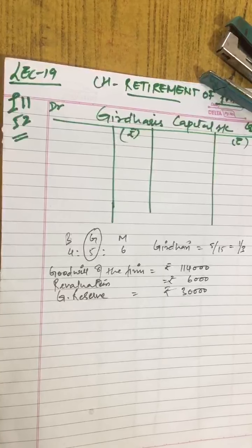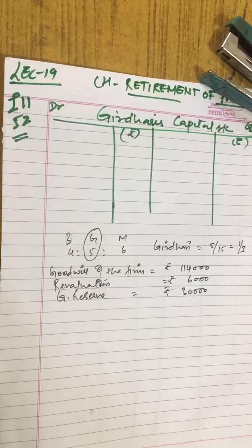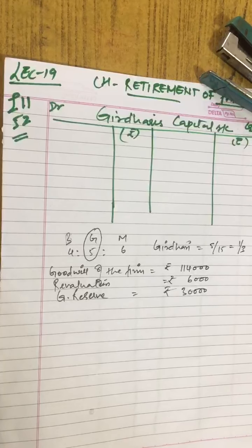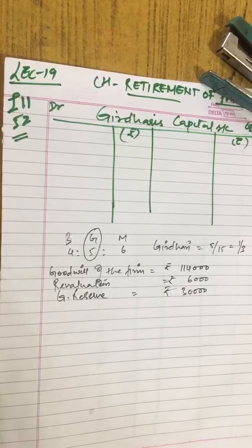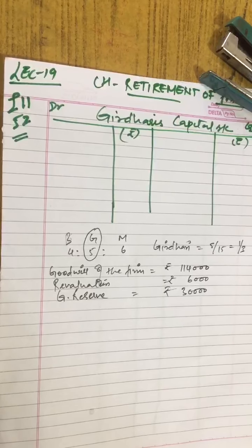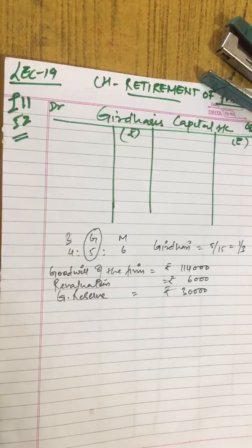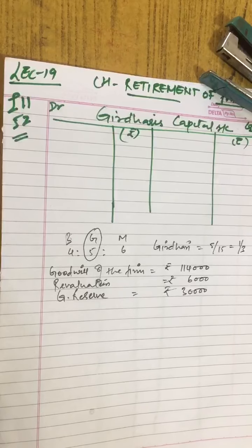Now the question is saying what? The amount of loan payable to Girdhari was transferred to his loan account. Banwari and Murari agree to pay Girdhari two yearly installments of rupees 75,000 each including interest at the rate of 10% per annum. And the balance including interest third year will be paid. This will be paid in three year installments. The question is saying that books will be closed on 31st March.